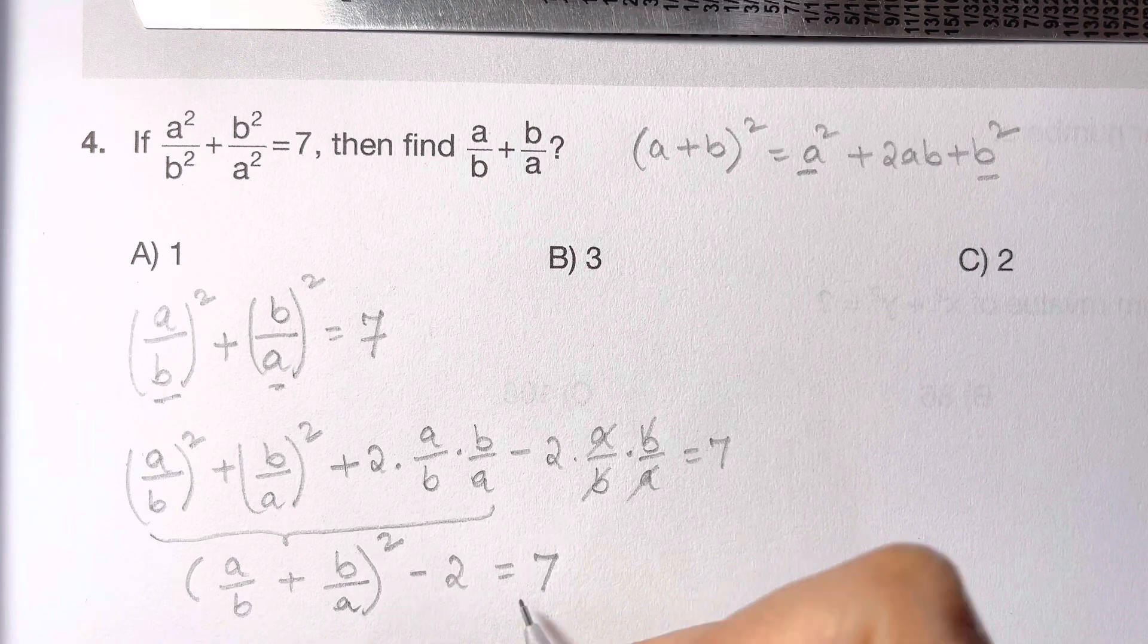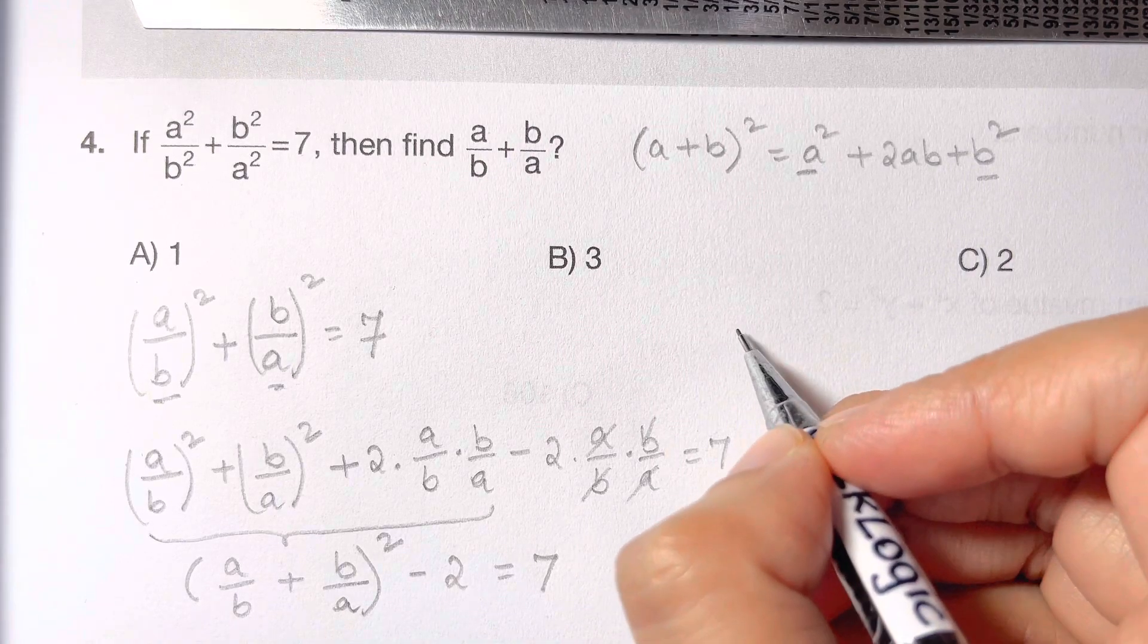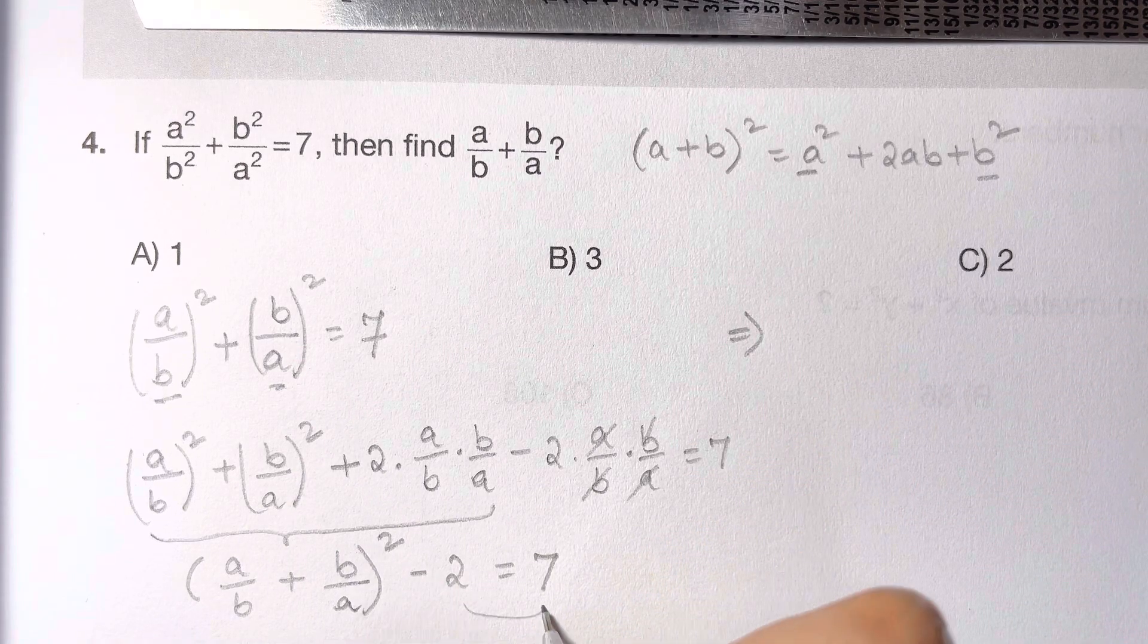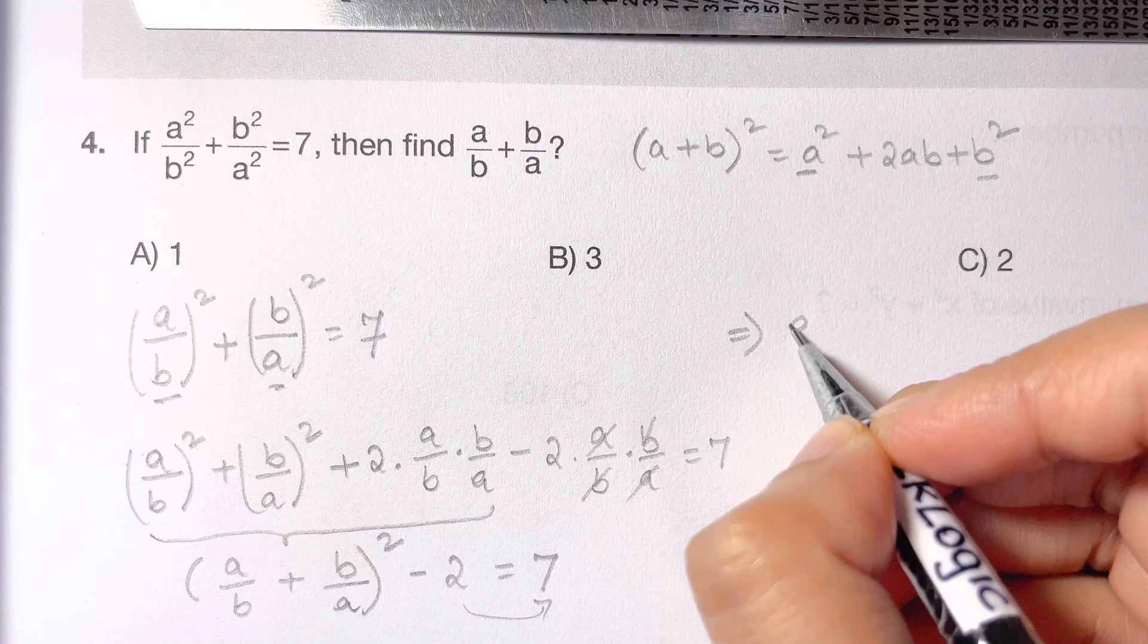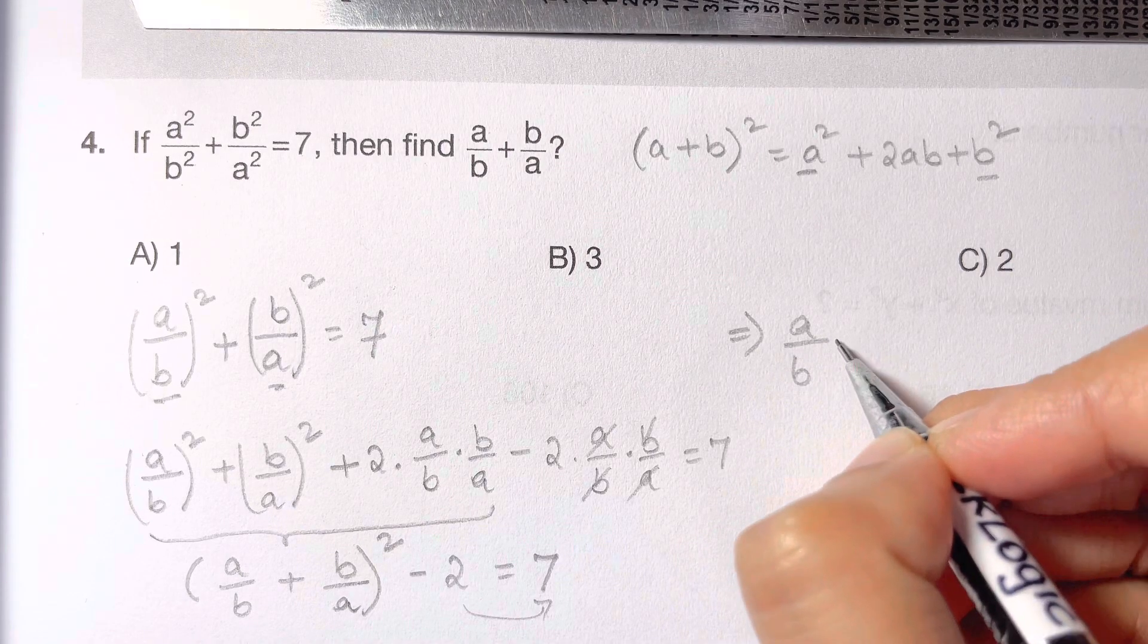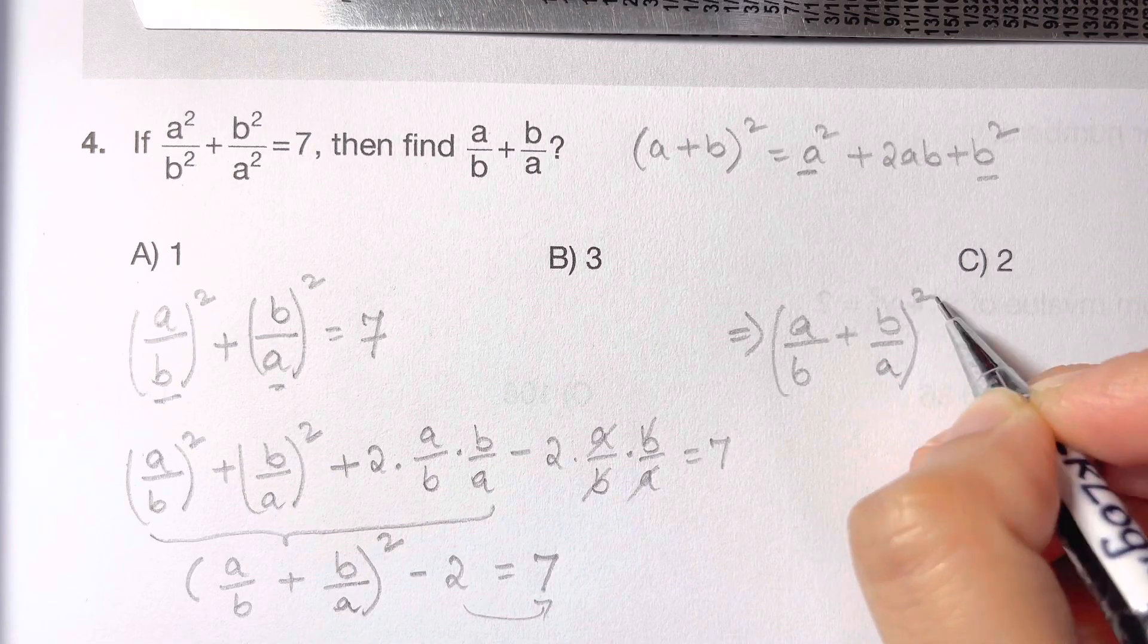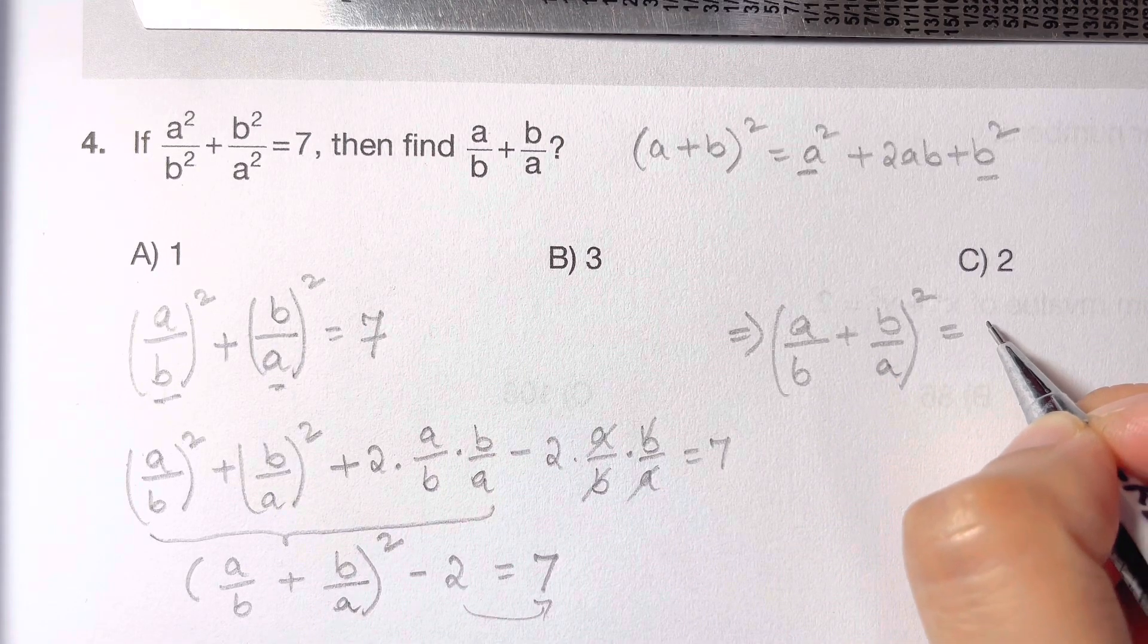Now how can I solve this? Let me write it down here. I'm going to send this to the other side, so I'm left with (a over b plus b over a)² equals 7 plus 2, that's 9.